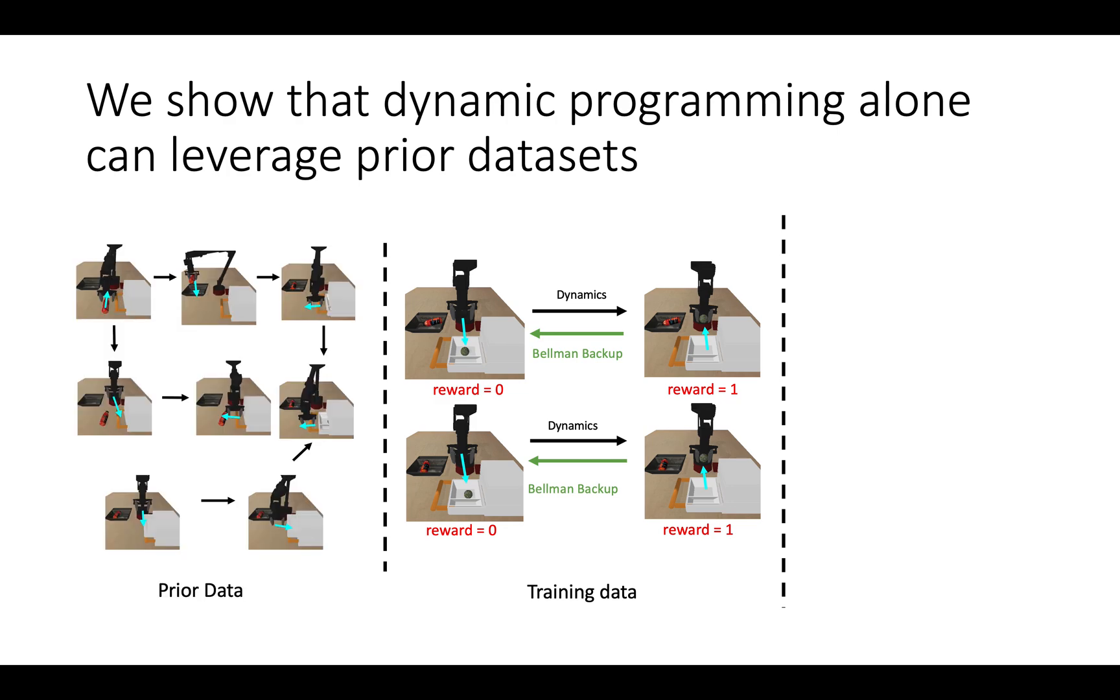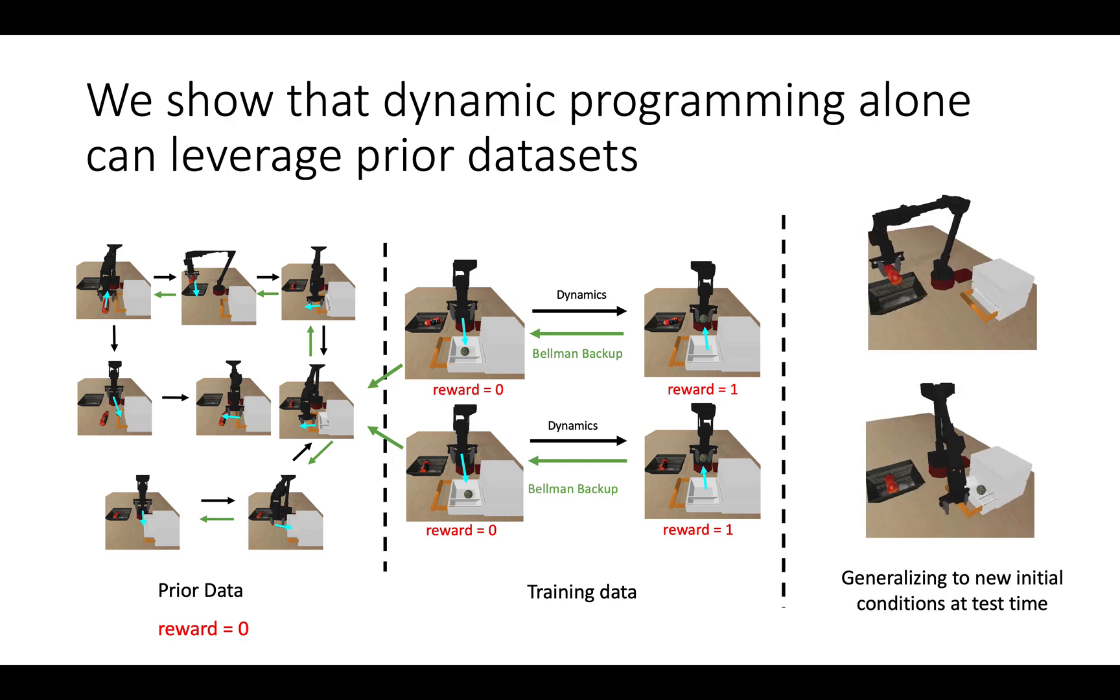We then add the prior dataset to the replay buffer, assigning all transitions a zero reward. Further dynamic programming on the expanded dataset allows Q-values to propagate to initial conditions that were unseen in the task data. Running reinforcement learning now results in a policy that can solve the task of interest from new initial conditions.